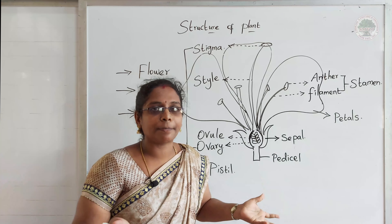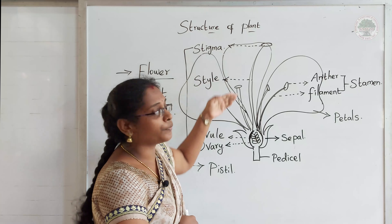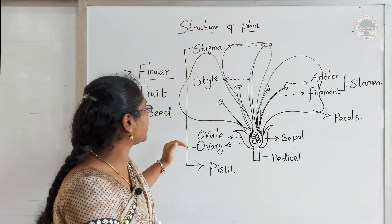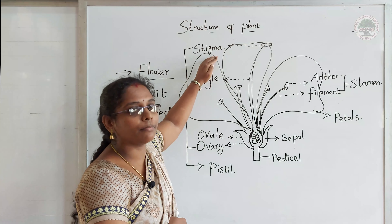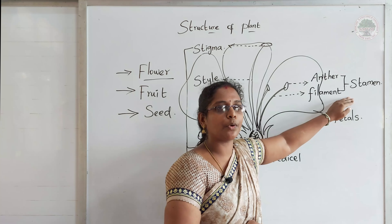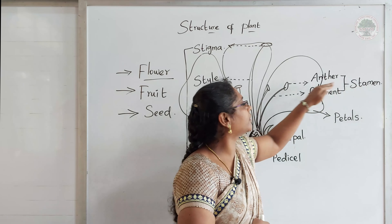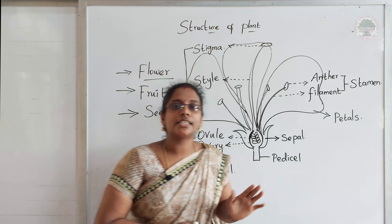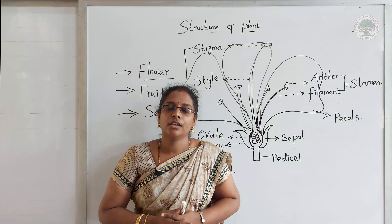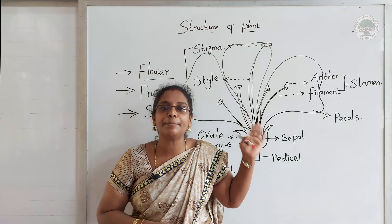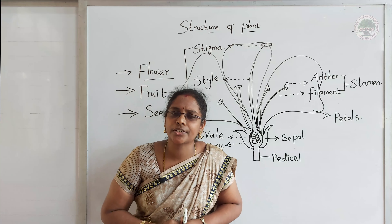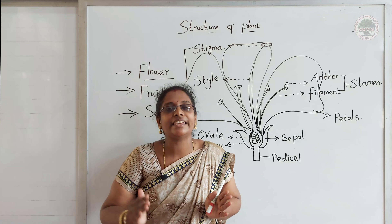So what are the parts we have seen? First we have seen the pedicel — the part which helps the flower to stick on the stem. Then we have seen the sepal, which is the protective part of the flower. Then come the petals, the colorful part of the plant. Next, the female reproductive organ — the pistil — contains the ovary, ovule, style, and stigma. The male reproductive organ is the stamen, which contains the anther and filament. This is the structure of the flower.